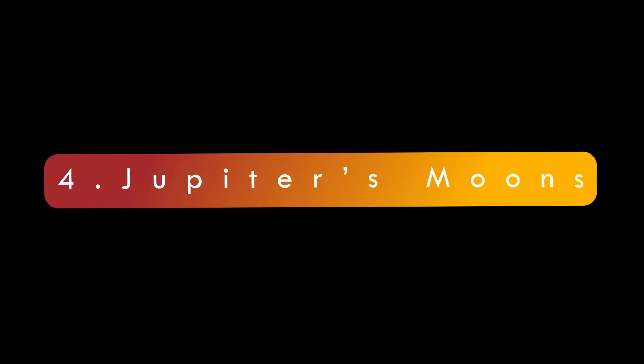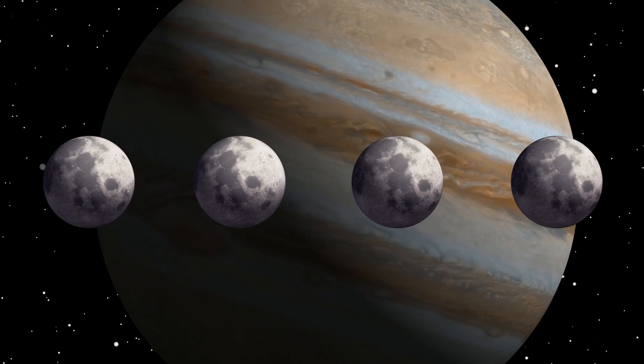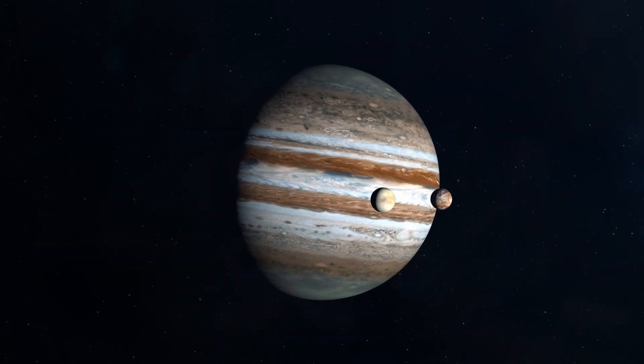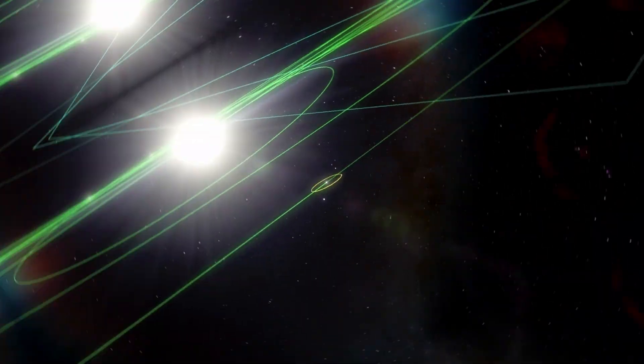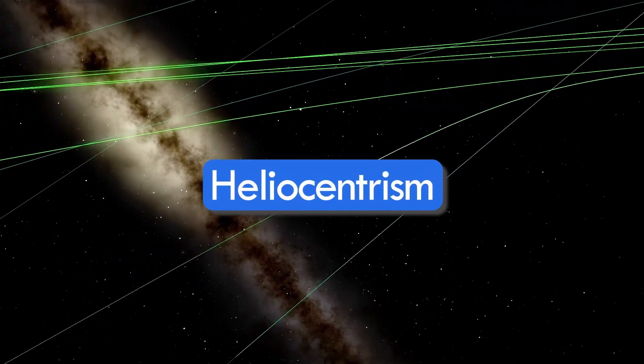Jupiter's moons: Galileo discovered four moons of Jupiter in 1610 using a telescope that he designed and created himself. They were the first moons discovered that didn't orbit Earth, making them the most important piece of evidence for Copernicus's model of heliocentrism.